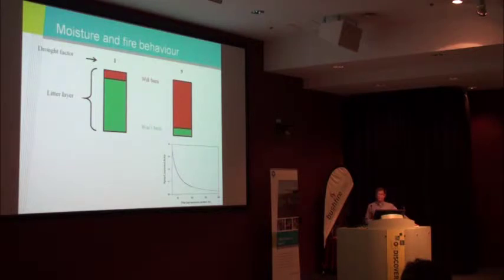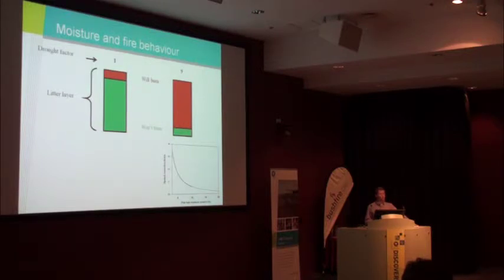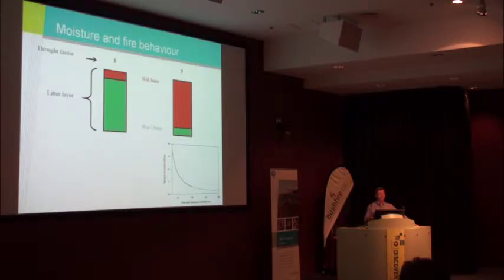Fuel moisture is important because it has a big effect on rate of spread, as you can see from the rate of spread versus moisture content function from the Project Vesta fire models. It also affects fuel consumption, which contributes to fire intensity, difficulty of suppression and carbon balance, and also processes like spotting — dry fuels are more likely to start spot fires. So moisture content and availability have an impact on a wide range of aspects of fire behaviour.